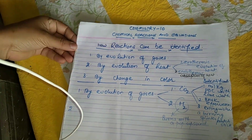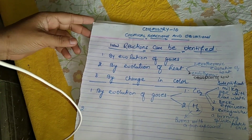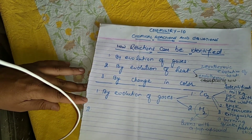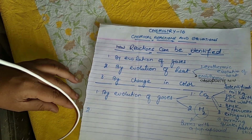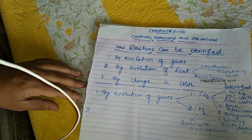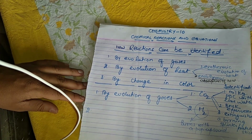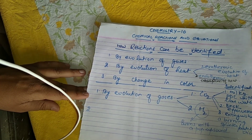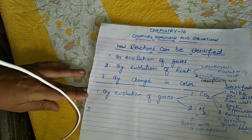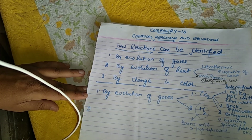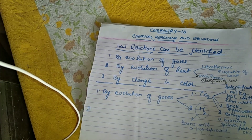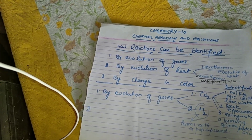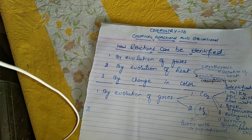Hello students, today we will start our Class 10th Chemistry Chapter 1: Chemical Reactions and Equations. The first and foremost thing — what is a chemical reaction? A chemical reaction can be defined as a combination of two chemical substances which results in the formation of a new chemical compound. So how can we predict that a chemical reaction is occurring or ongoing?